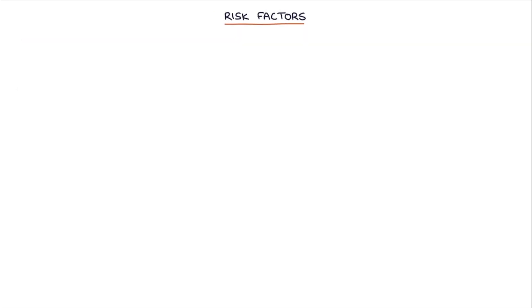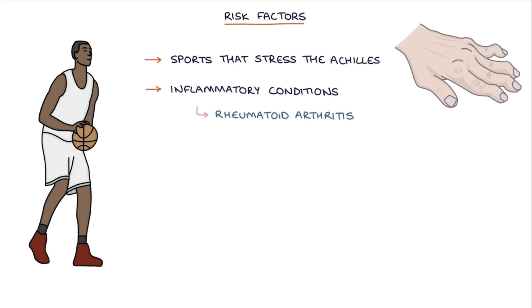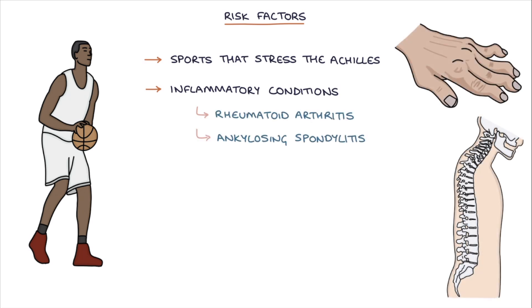A big risk factor is sports that stress the Achilles tendon, for example basketball, tennis, or track athletics. Other risk factors are inflammatory conditions, for example rheumatoid arthritis and ankylosing spondylitis.